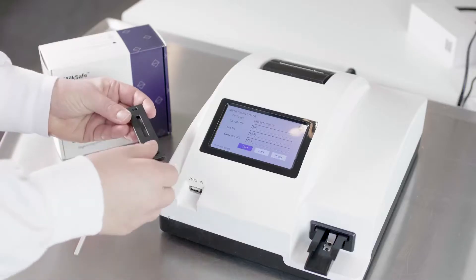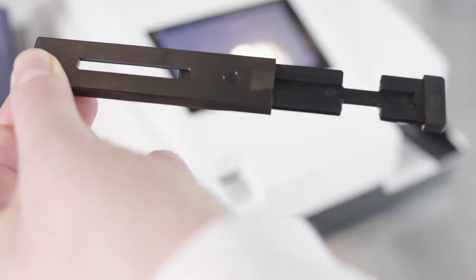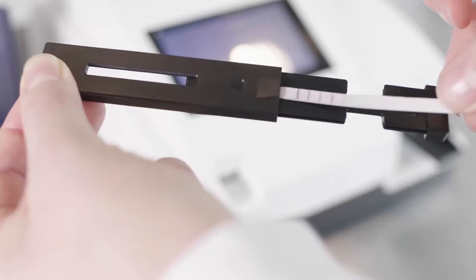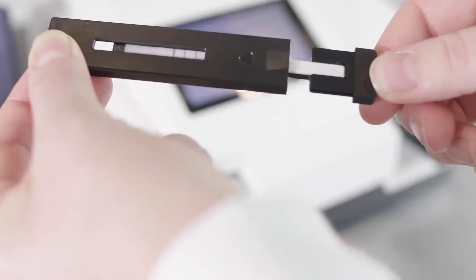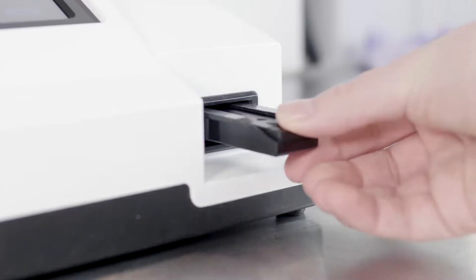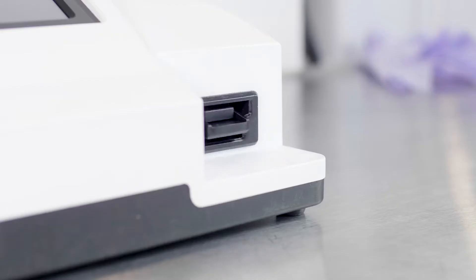Insert the test strip into the cartridge. Insert the cartridge into the port on the reader. Press Test to initiate the analysis of the result.